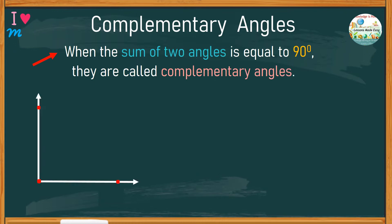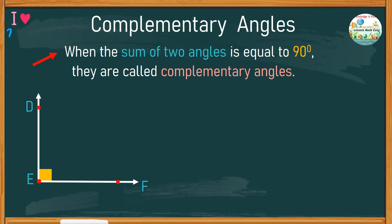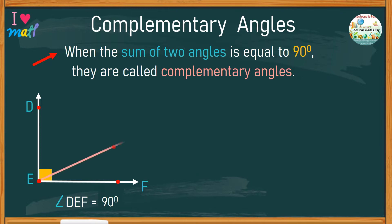Take a look at this illustration. Here is a right angle, or a 90-degree angle. We know that for certain because one ray is perpendicular to the other. Let's name this angle DEF. Its measurement is 90 degrees. To come up with complementary angles, we simply split this angle into two by adding one side. Let's have side EG.